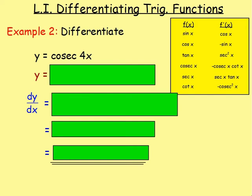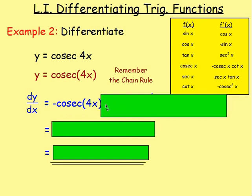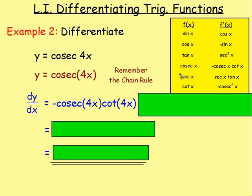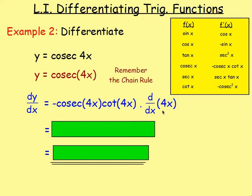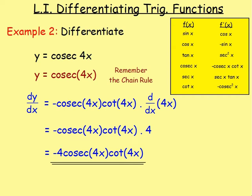Example 2: differentiate y equals cosec(4x). Again, you use the chain rule because we've got cosec of the whole 4x. Differentiate outside the brackets — cosec becomes negative cosec cot. So we'd have negative cosec(4x) times cot(4x), replacing x with 4x throughout. Then multiply by the derivative of 4x, which is 4. Moving the 4 to the front: negative 4 cosec(4x) cot(4x). That is your answer.